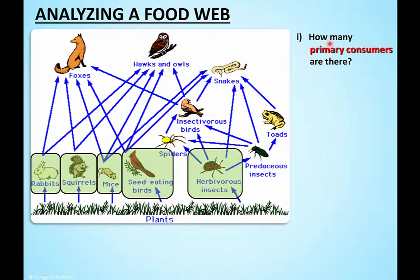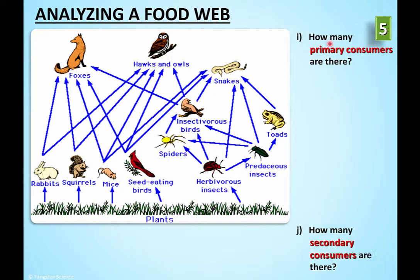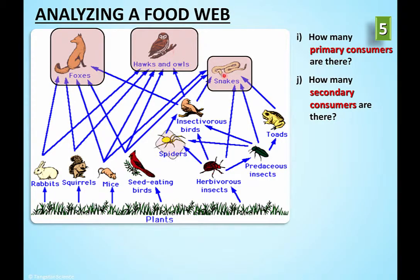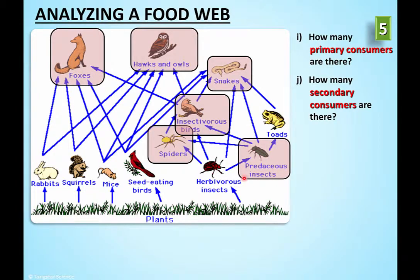Now we're going to say secondary consumers instead of carnivores. Remember, the secondaries eat the primaries, and the primaries eat the plants. For example, the owl is a secondary because he eats a rabbit which is a primary because it eats a plant - so: plant, primary, secondary. This bird is also a secondary: plant, primary, secondary. They're all secondaries.